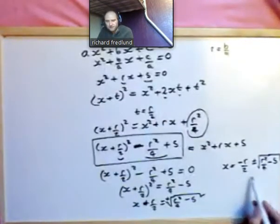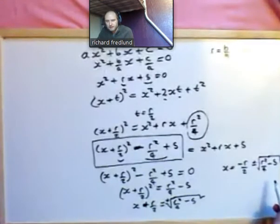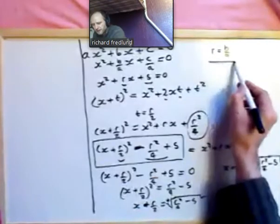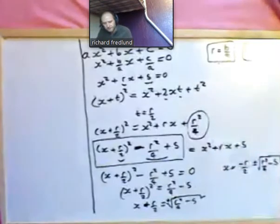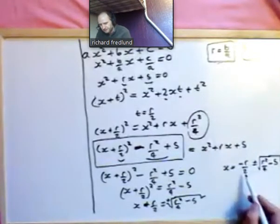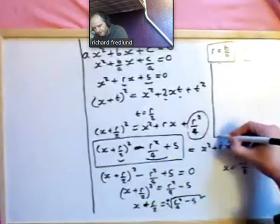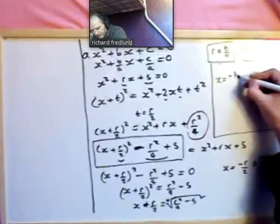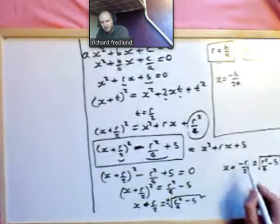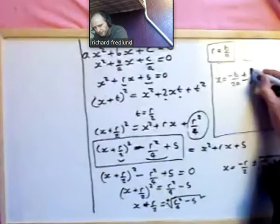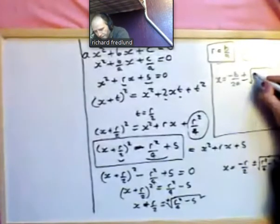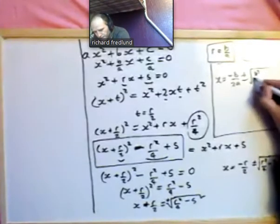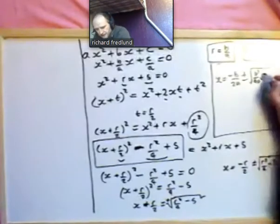That's not in standard form, so we need to do a little bit of rearranging. Remember, at the beginning we let r equal b over a and s equal c over a. Substituting those values in: x equals minus b over 2a, plus or minus the square root of b squared over 4a squared minus c over a.